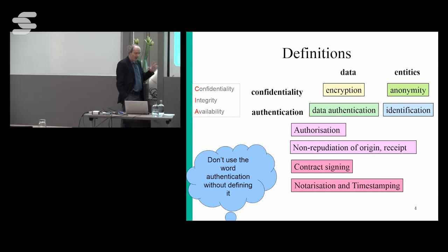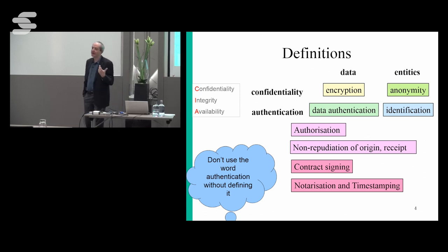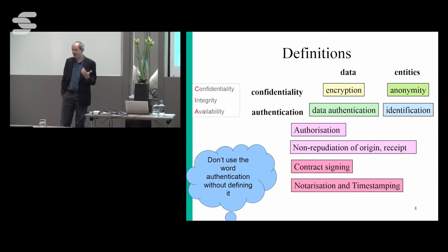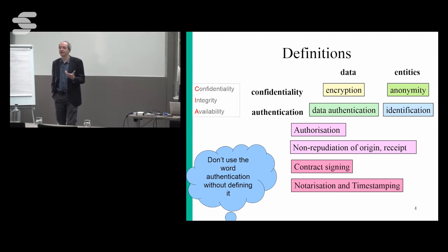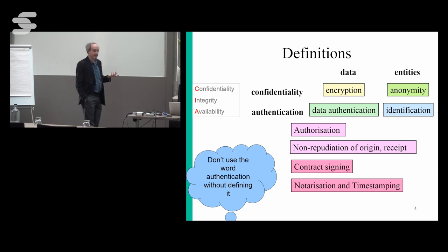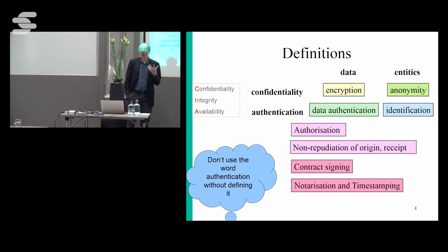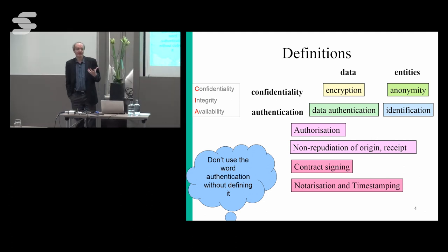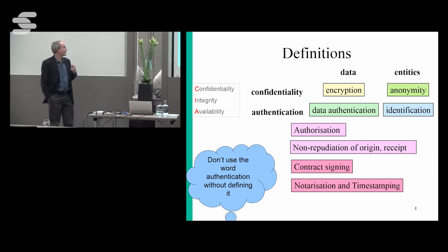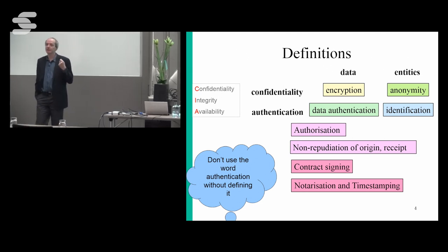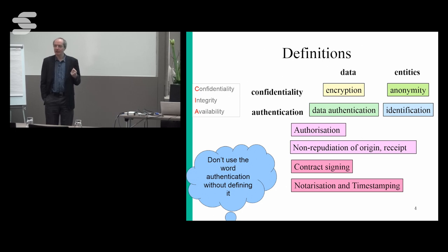What about the entities involved in a system — persons, software processes, or devices? Sometimes you want to hide who they are. Think of websites with medical information, elections, or dissidents under an oppressive regime wanting to speak out — then you use anonymity techniques, and George will lecture about this later this week. But in most cases we want to authenticate the entities involved: we want to find out who is whom, and cryptographers call this identification.